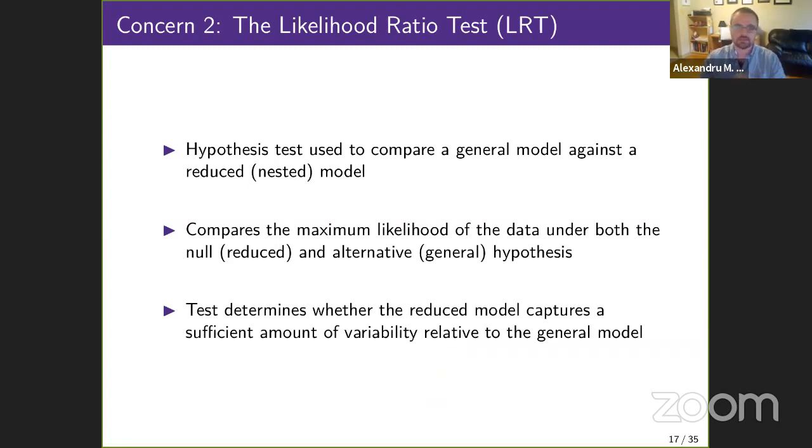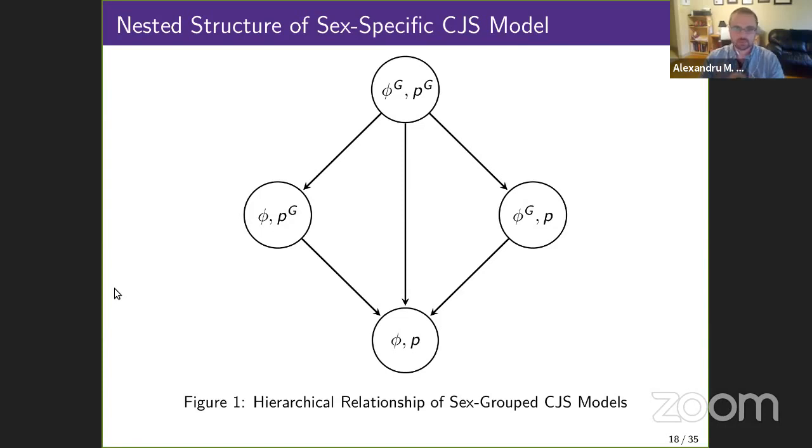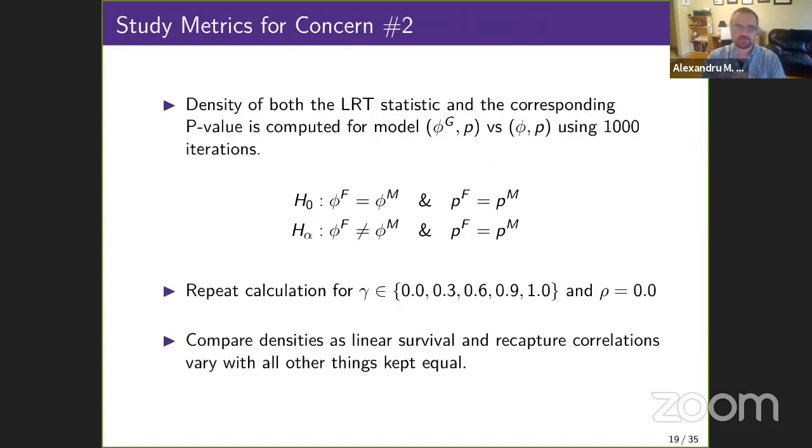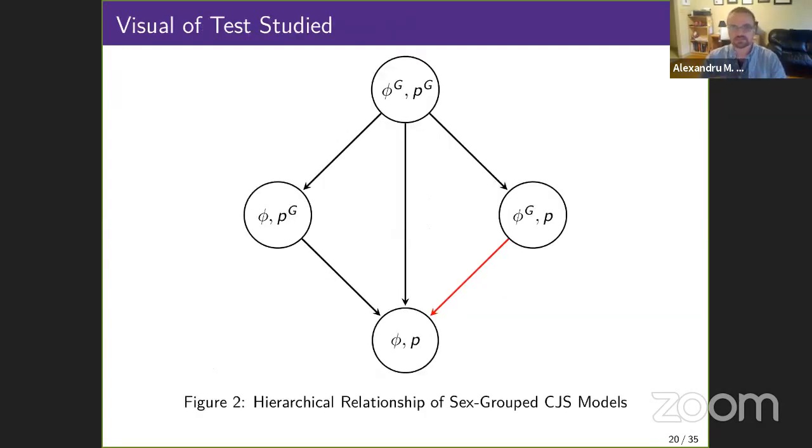The second concern is that the interpretability of the likelihood ratio test begins to fail. The likelihood ratio test can be used to compare different cases of the standard CJS model, and we can see whether the reduced models account for an acceptable amount of variation within the data. Figure one represents the hierarchy for the CJS model we're looking at when gender effect is under consideration for both survival and recapture. Each line in this hierarchy represents a possible likelihood ratio test between a more general model and a relatively reduced model. To study this behavior on correlated mark capture data, I computed the density of both the test statistic and the corresponding p-values across various levels of survival correlation in the data. Based on Wilkes' theorem, these distributions should be approximately chi-squared and uniform respectively.